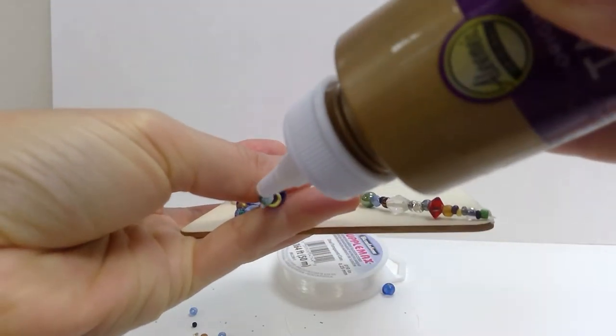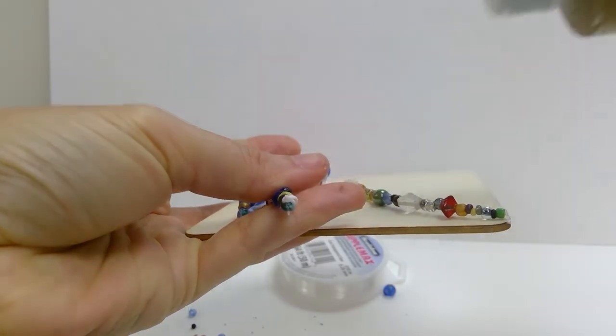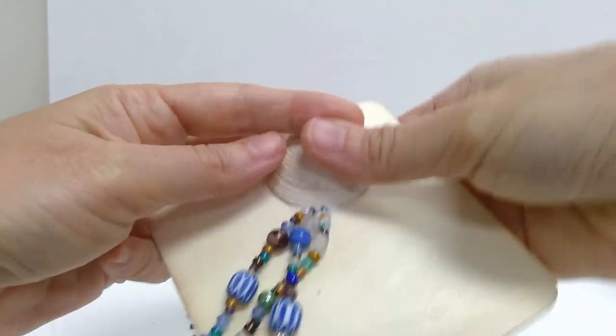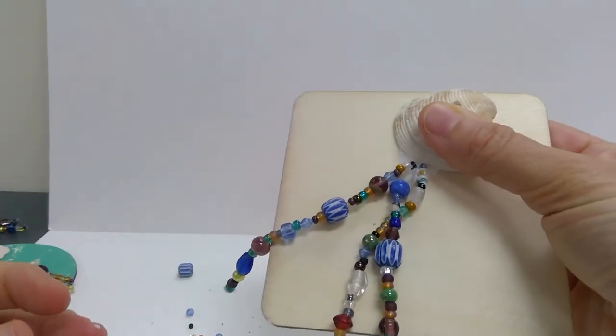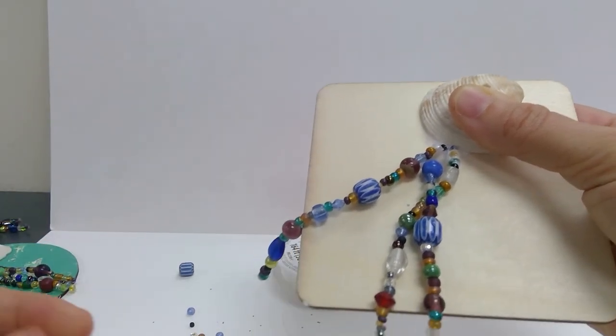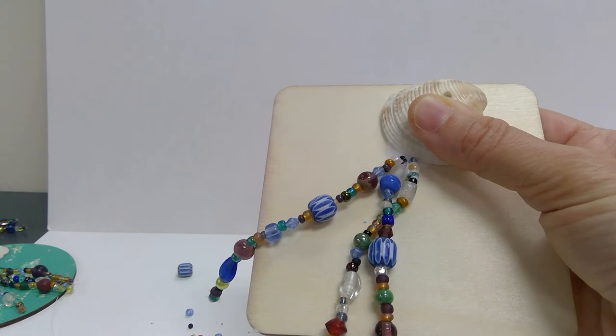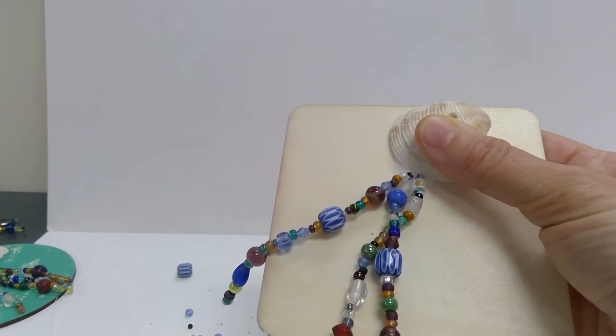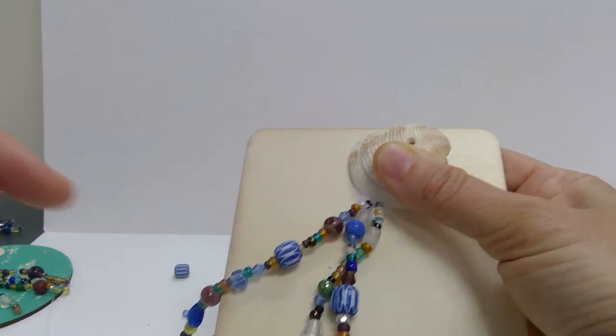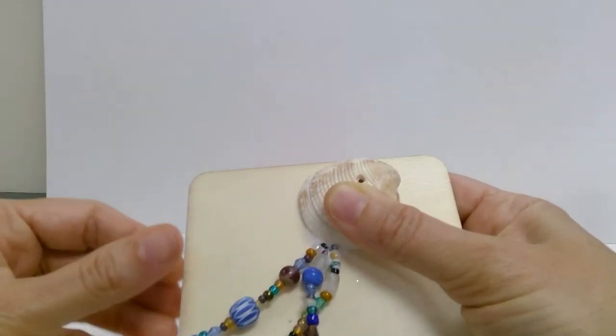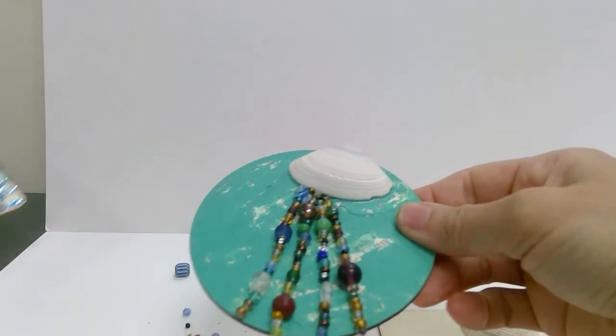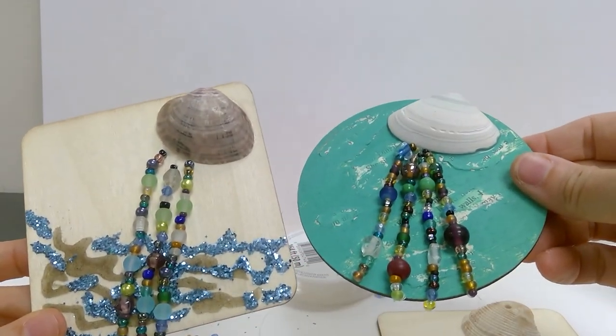And I did three beaded strands, but you can do four or five. Again, there's a lot of variables with this project. Okay. So I have it glued to where I want it to be. And now I'm basically just going to wait for it to dry. And I haven't decided on this one if I'm going to put a magnet on the back or not. Also, if you decorate it with the beads and you feel like it's too plain, you can always go back and put some paint in or decorate the coaster in some way or another. Okay. So that is how you make your beaded shell jellyfish.